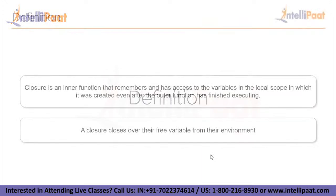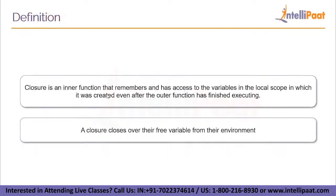Now let's move on to the definition. A closure is an inner function that remembers and has access to the variables in the local scope in which it was created, even after the outer function has finished executing. A closure can also be viewed this way: a closure closes over its free variables from its environment. A free variable means the outer function has defined a variable and the inner function uses that variable even though it is not declared inside the inner function.